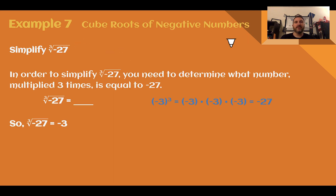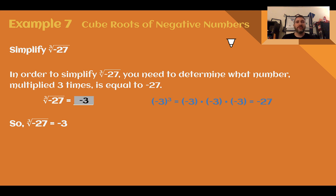Example 7, cube roots of negative numbers. Simplify the cube root of negative 27. What number times the same number times the same number gives negative 27? You might be tempted to say there's no solution, but that's for square roots — cube roots just means your answer will be negative. Negative 3 times negative 3 times negative 3 gives us negative 27, so the cube root of negative 27 is negative 3.